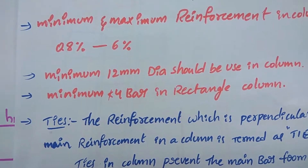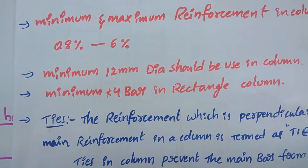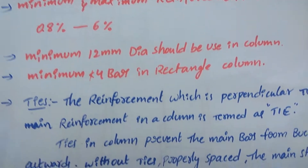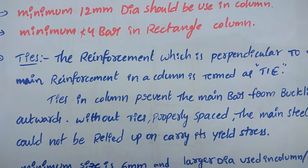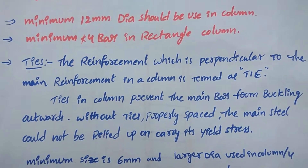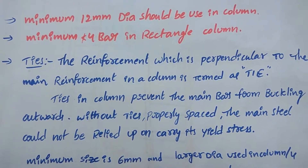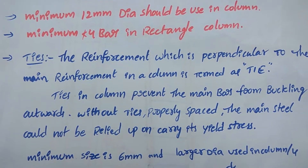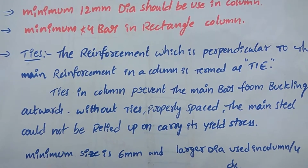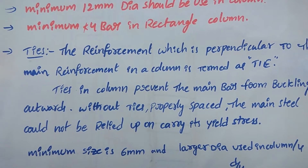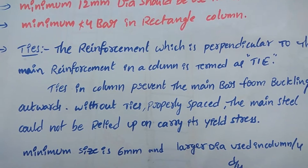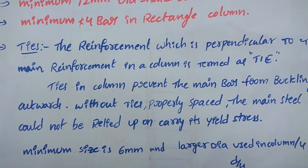Minimum 4 bars should be used in a rectangular column. Ties are the reinforcement which is perpendicular to the main reinforcement in a column. Ties in a column prevent the main bars from buckling outwards. Without ties properly spaced, the main steel could not be relied upon for carrying yield stress.